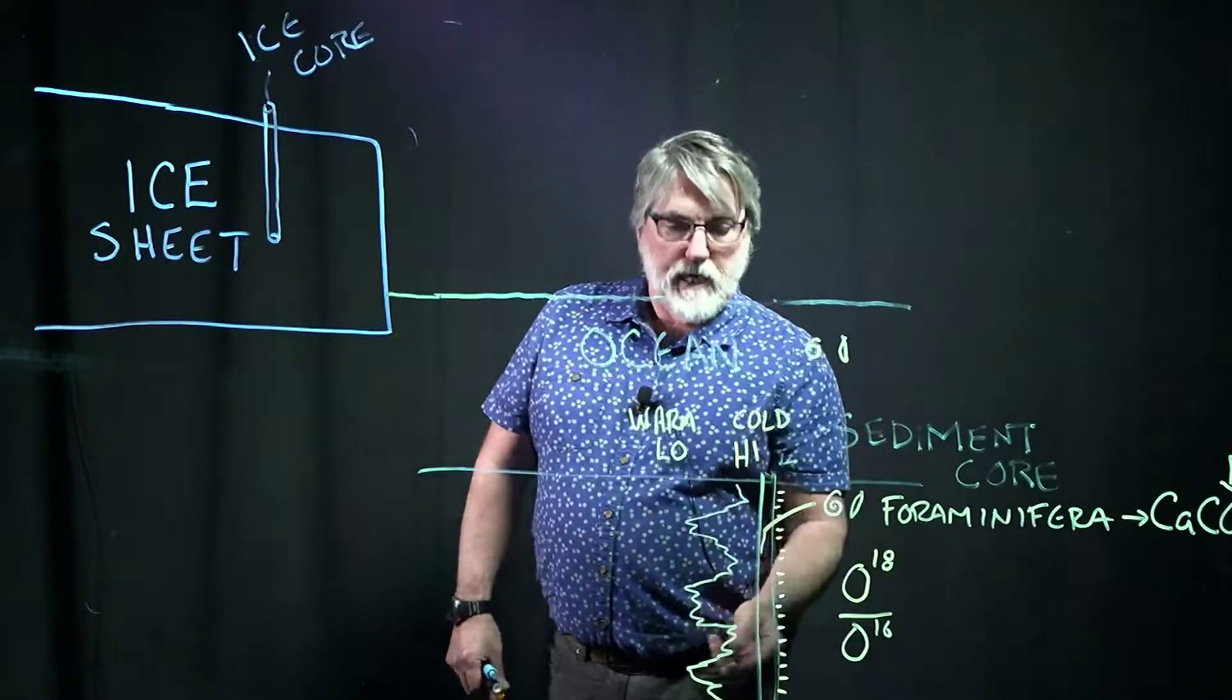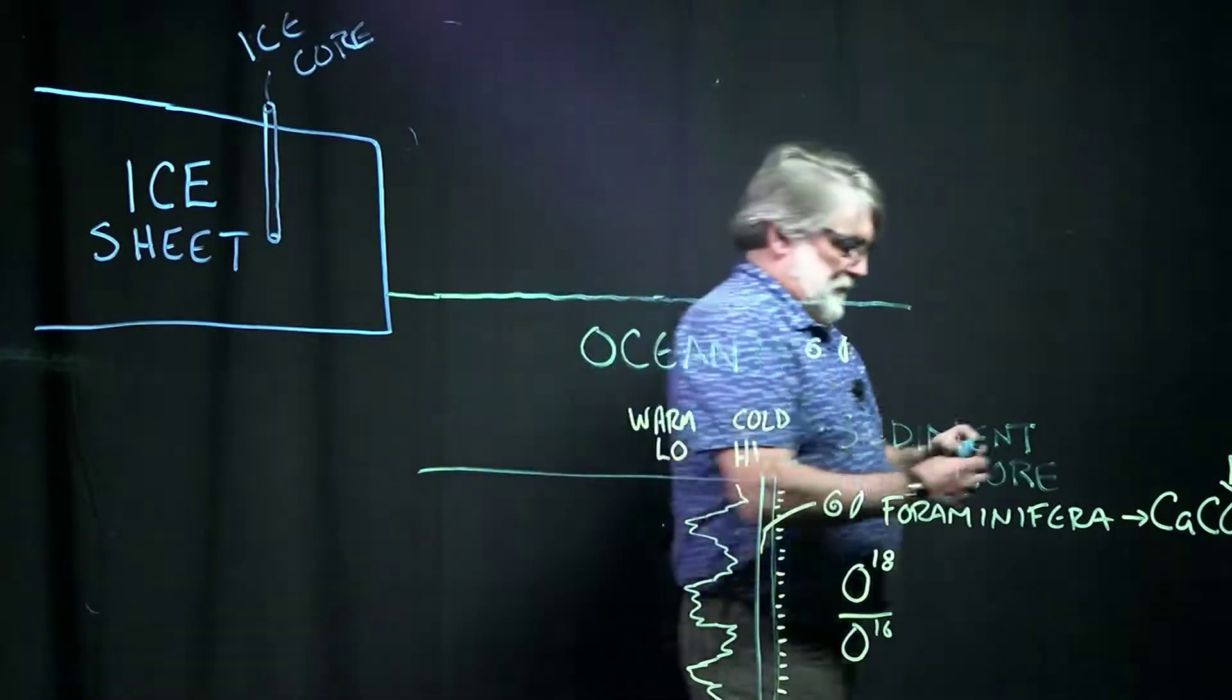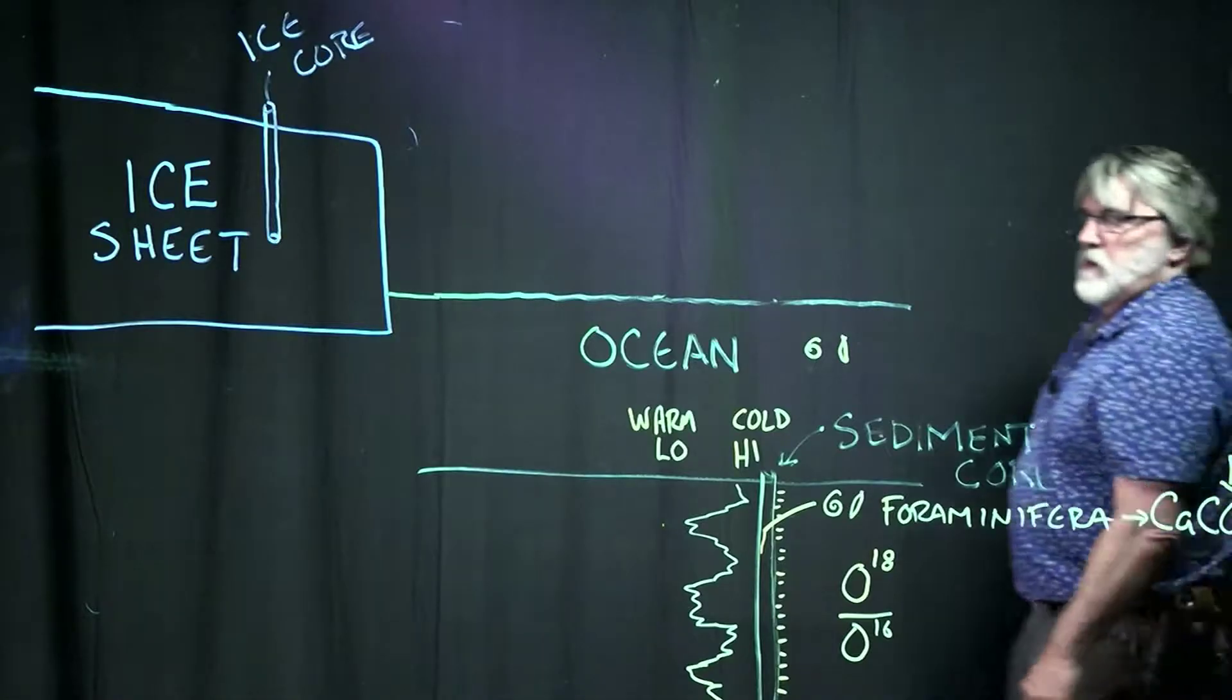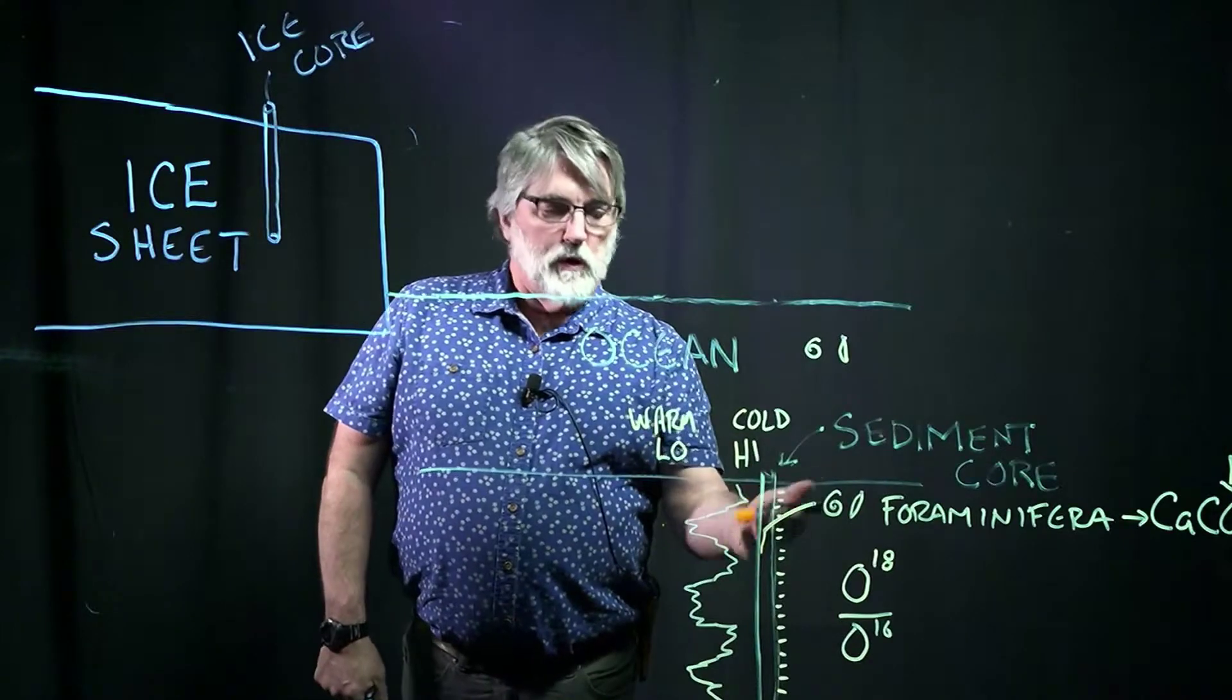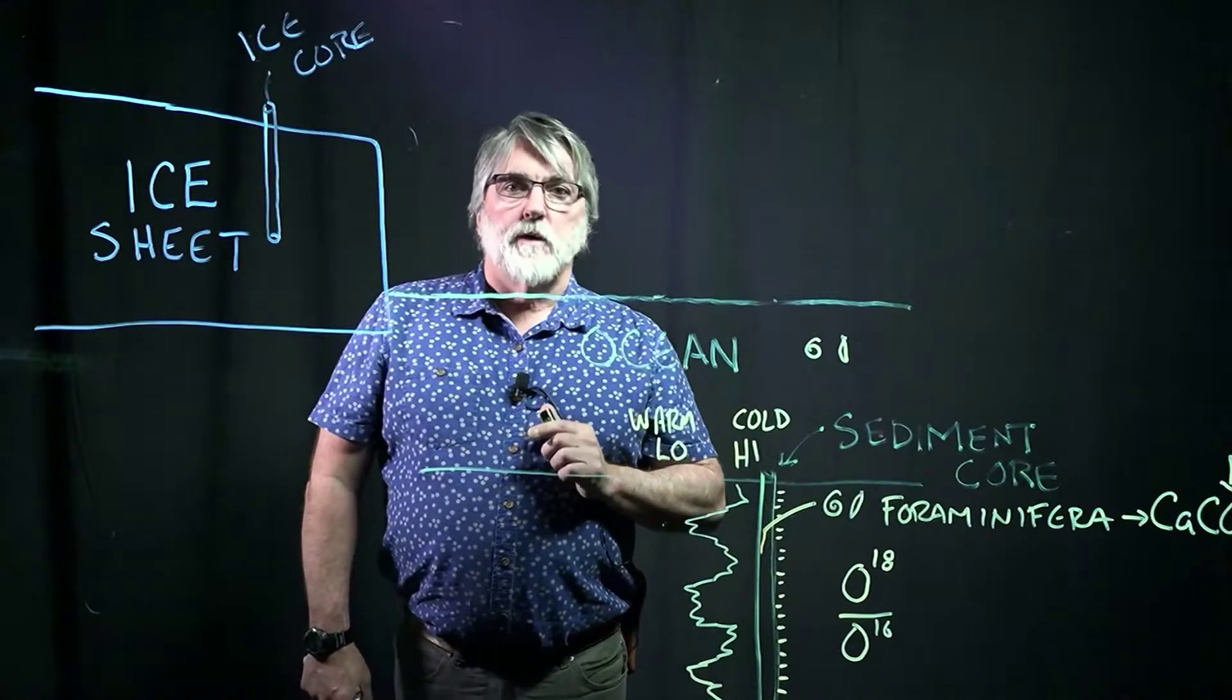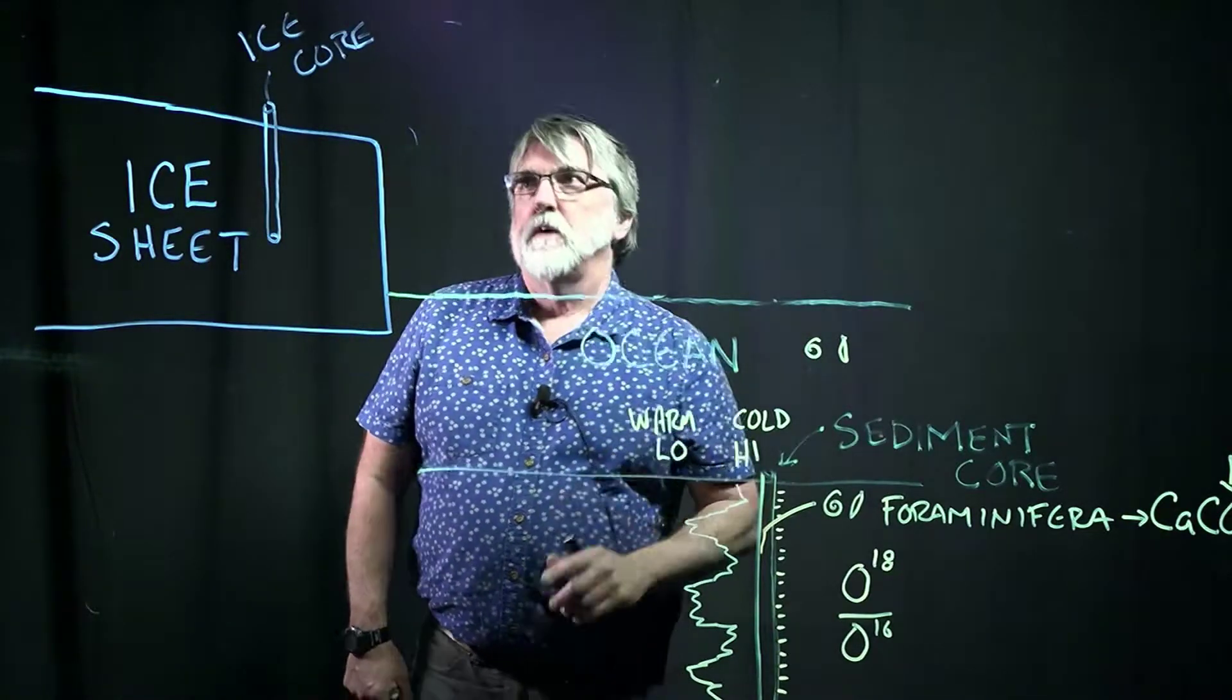So that's in the marine system. That's how we get what's called an oxygen isotope record from a marine core. But we also have another climate archive, and those are ice cores.